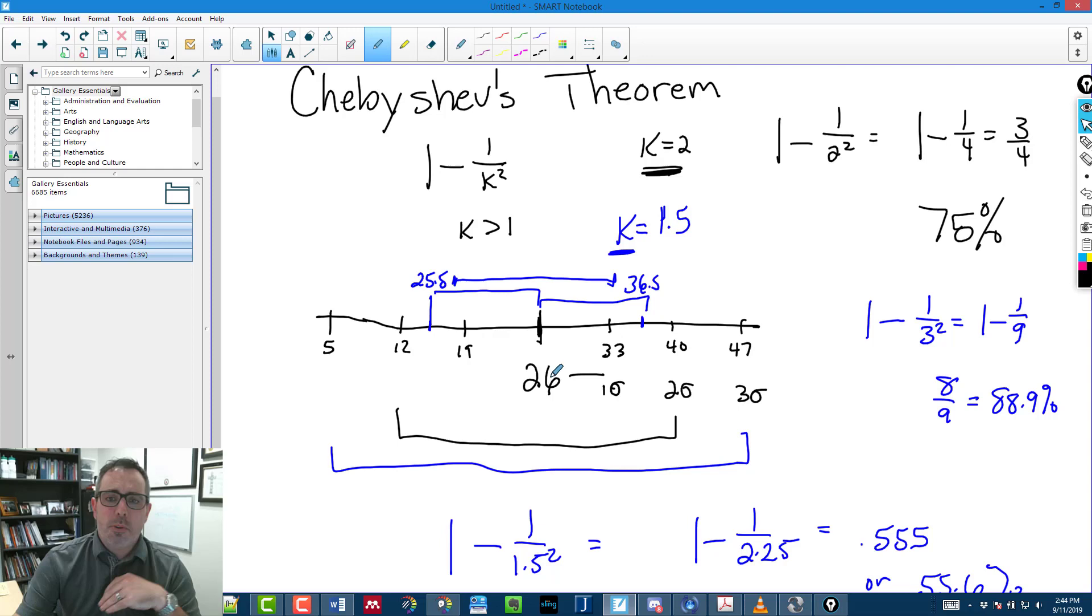It's referred to as the Z-score formula, which is going to help us figure out exactly what k would be equal to. And we'll take a look at the Z-score formula in another video.